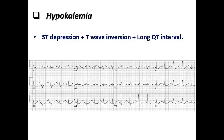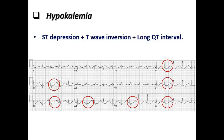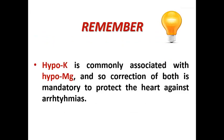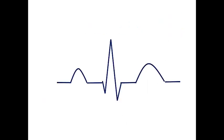Hyperkalemia causes hyperacute narrow-pointed T waves with ST elevation, but in hypokalemia we see ST depression with T wave inversion and long QT interval, and sometimes prominent U waves. The final result of hypokalemia can be torsade de pointes — polymorphic VT on top of long QT — which can degenerate into VF and sudden cardiac arrest. Whenever you see ST depression with long QT interval, please exclude hypokalemia. Also remember that hypokalemia is commonly associated with hypomagnesemia, so correction of both is mandatory to protect the heart against arrhythmias.